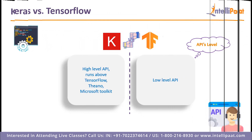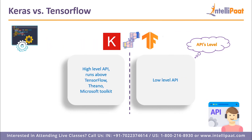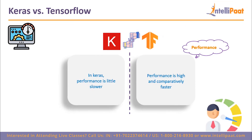Next is API level: Keras is a high-level API that runs on top of TensorFlow, as well as Theano and CNTK — it is easy to use and facilitates faster development. Whereas TensorFlow is the framework that provides both low and high level APIs, so in large use cases TensorFlow gives you both level options. The next parameter is performance: in Keras, performance is quite slow, whereas TensorFlow is suitable for high performance.